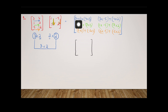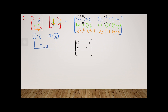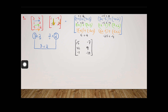Now let's evaluate. Three times one is three, four times three is twelve, so three plus twelve equals fifteen. Three times minus five is minus fifteen, four times two is eight, so minus fifteen plus eight gives negative seven. One plus twenty-one is twenty-two. One times minus five is minus five, seven times two is fourteen, so fourteen minus five is positive nine. Five times one plus minus six gives negative one. Five times minus five is minus twenty-five plus minus four gives minus twenty-nine.